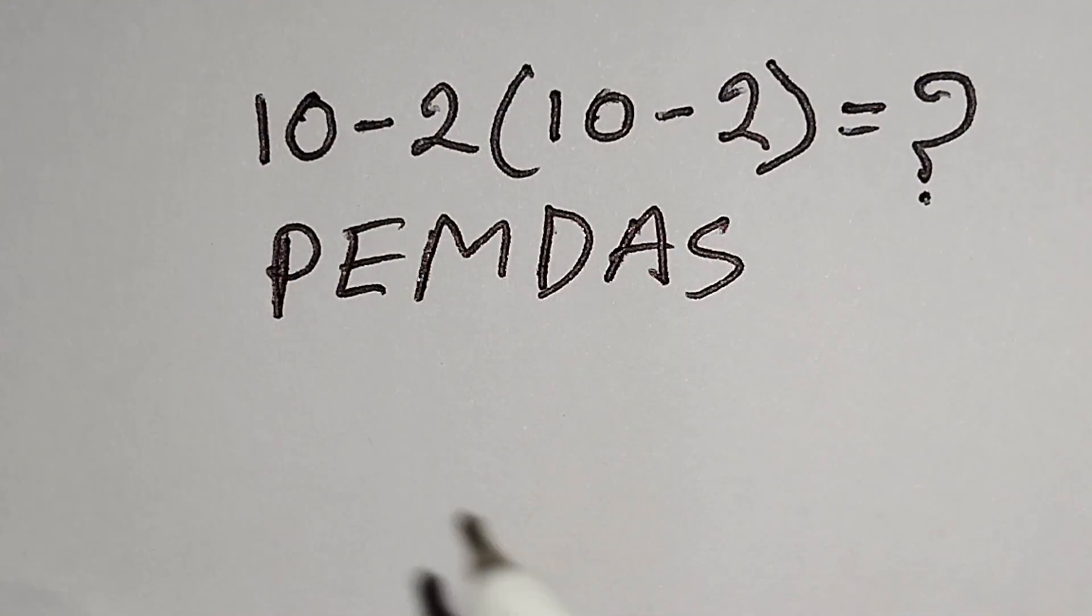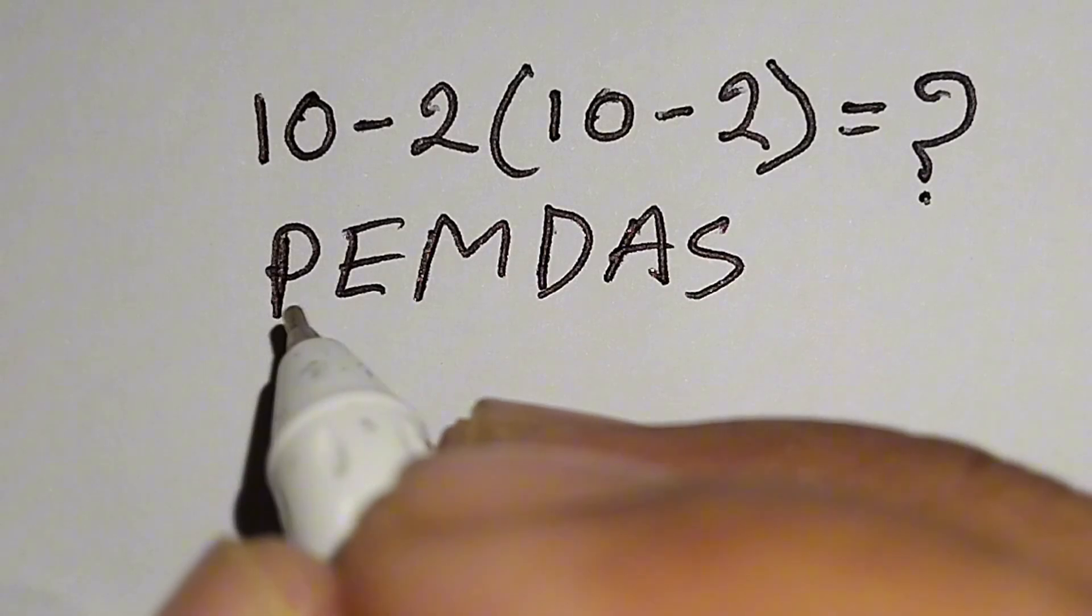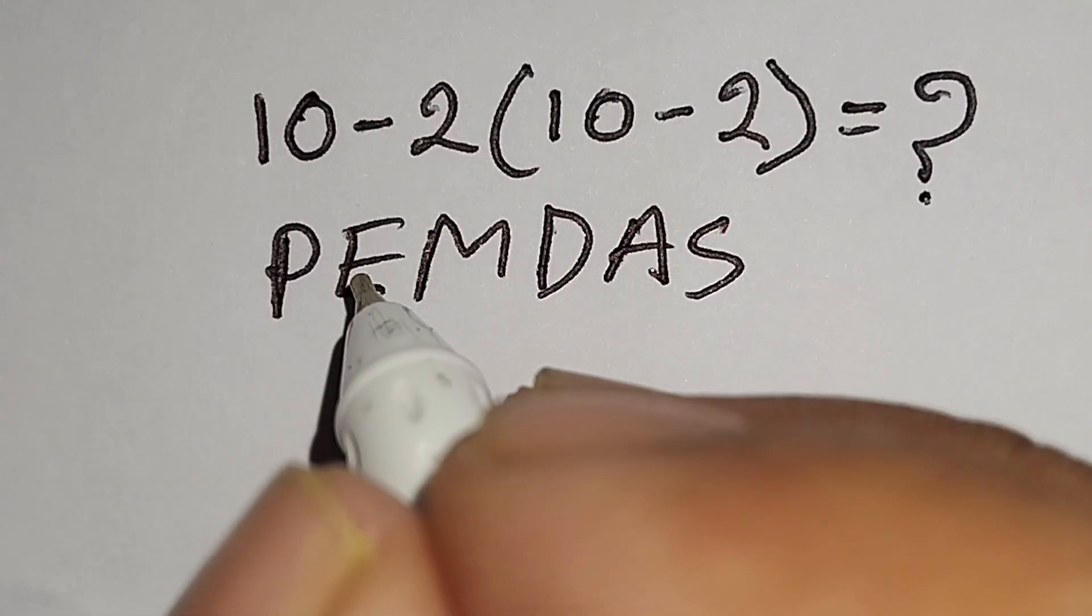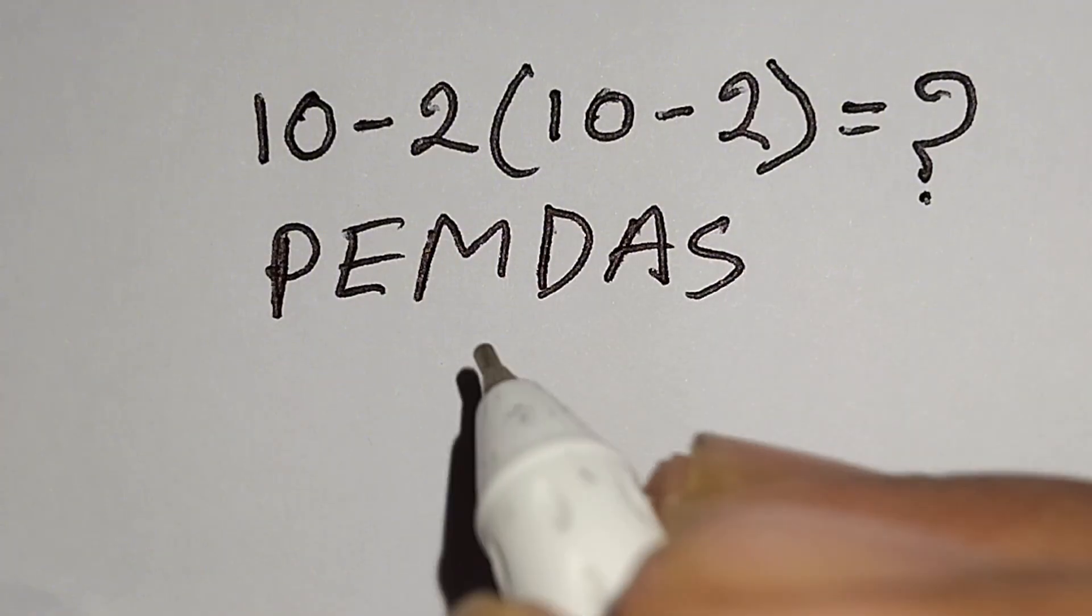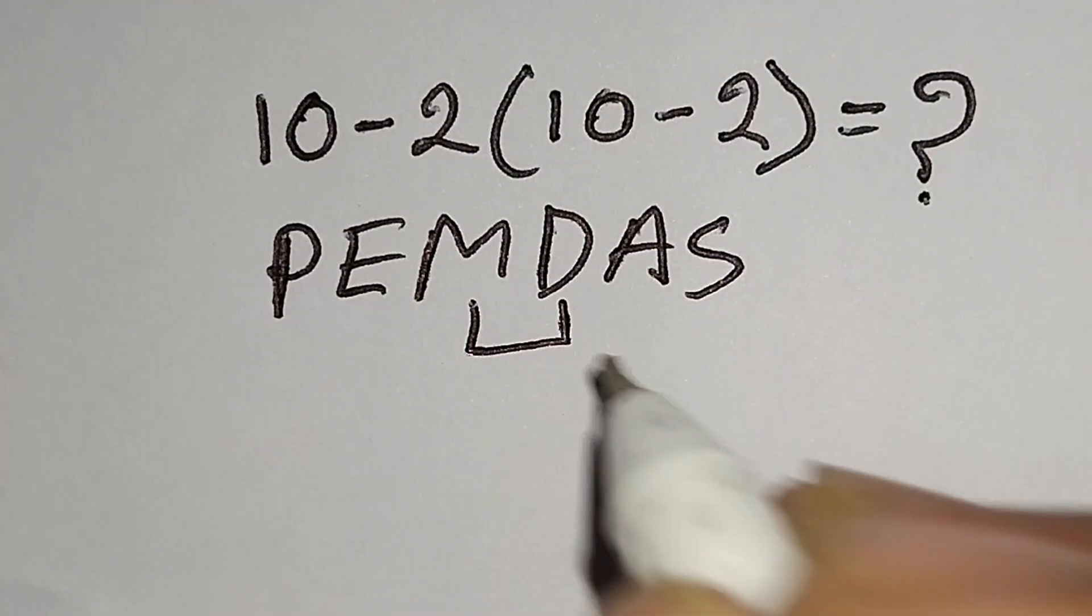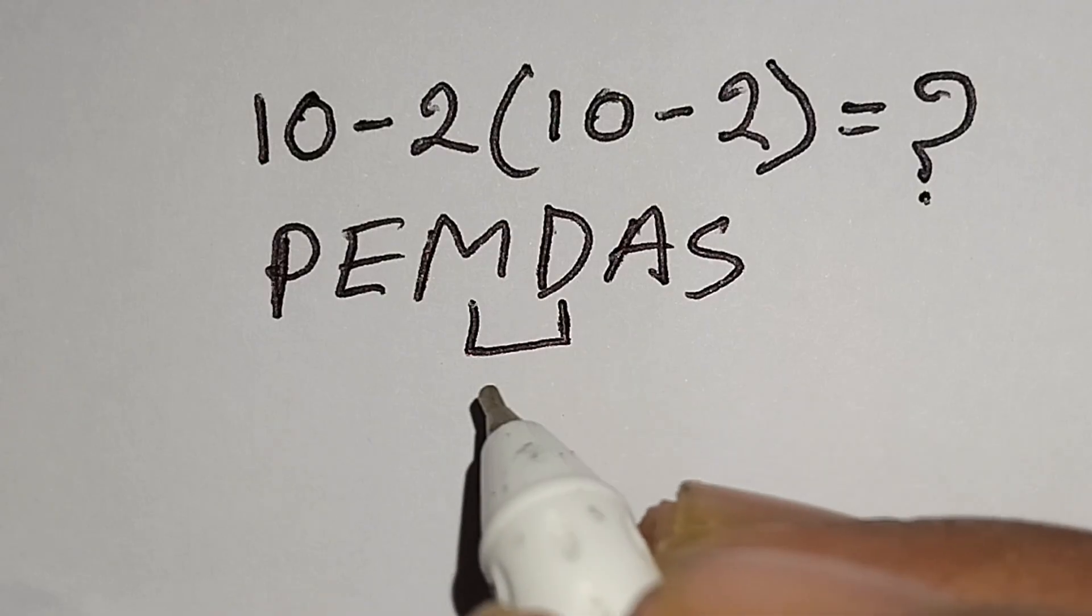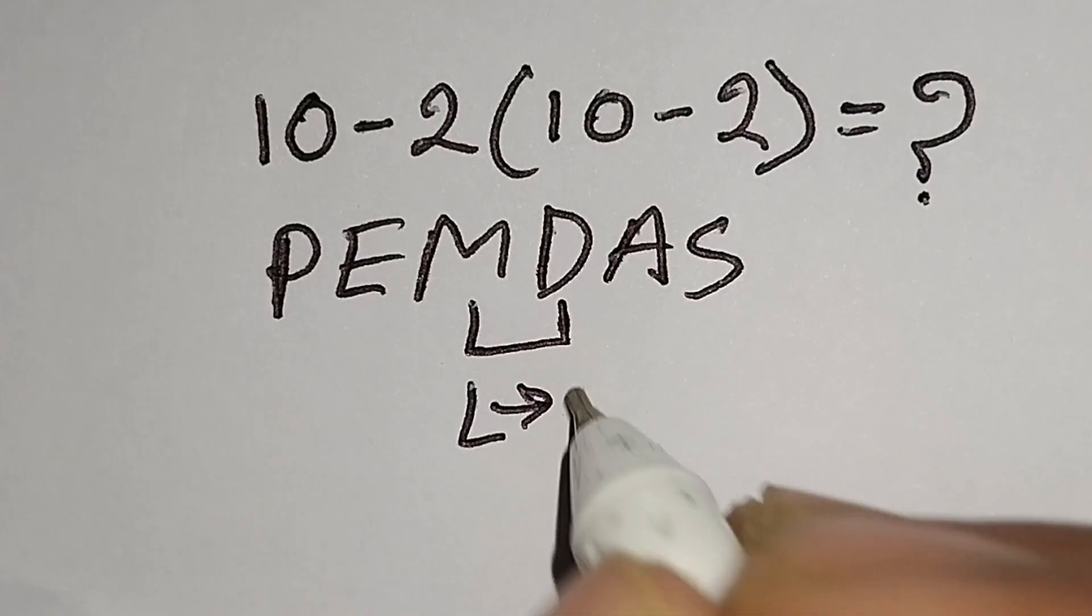According to PEMDAS rule, at first we have to work with parenthesis, then exponent, then multiplication or division, then addition or subtraction. Remember, multiplication and division have same priority, for this we have to work left to right.